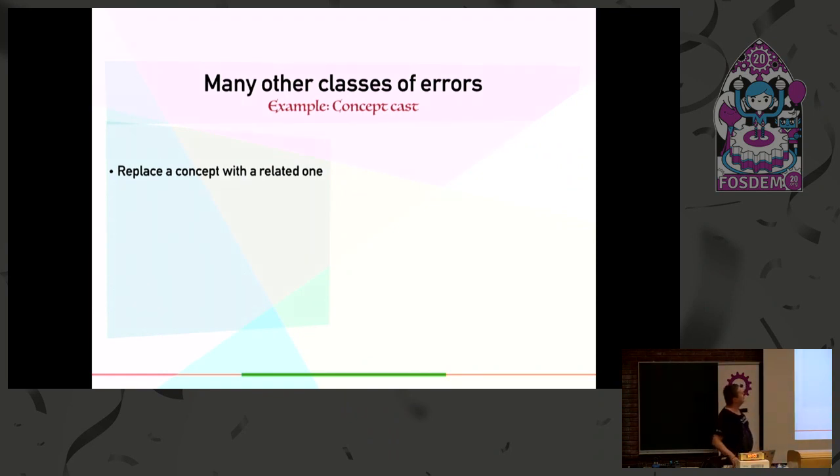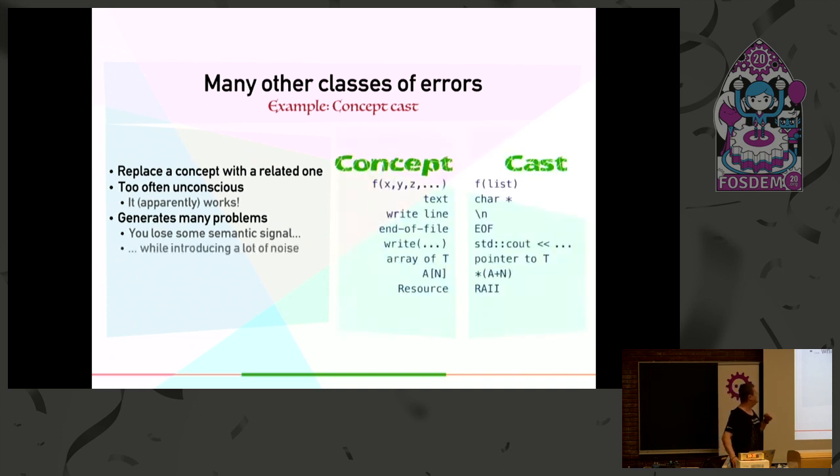Let me start with a simple example which I call concept cast. Concept cast is when you replace a concept in your head with another one that is related. The problem is that very often it's unconscious, you don't know you're doing that, and it seems to work. But it generates many problems because you lose semantics and signal.